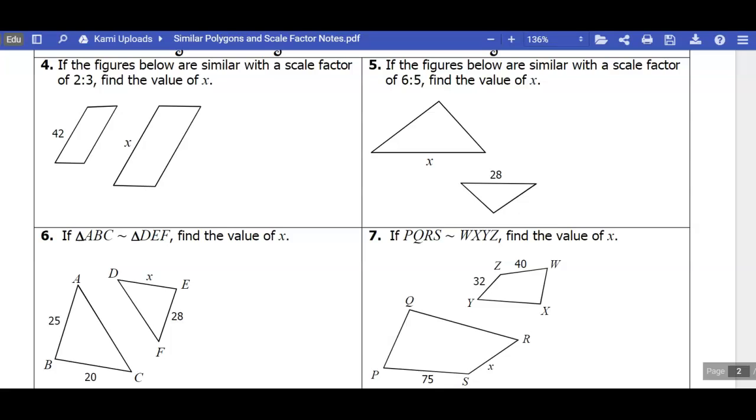So I know that my scale factor is two-thirds, so I'm going to write that as a fraction. If they don't specify, just assume that it's a scale factor of the figure on the left to the figure on the right. And that would make sense because this figure looks smaller than the figure on the right with the x in it, so the two would seem to make sense that it would correspond with the smaller figure.